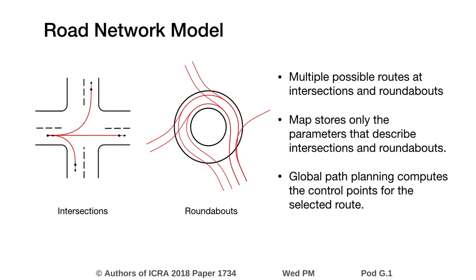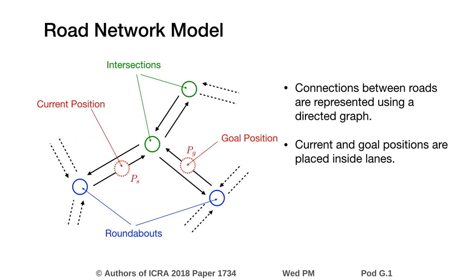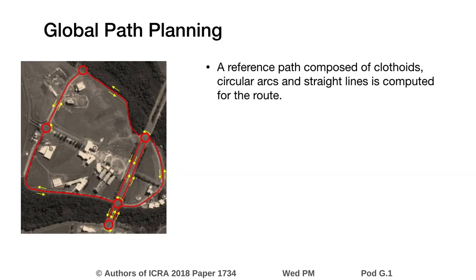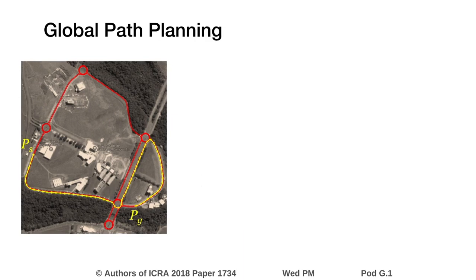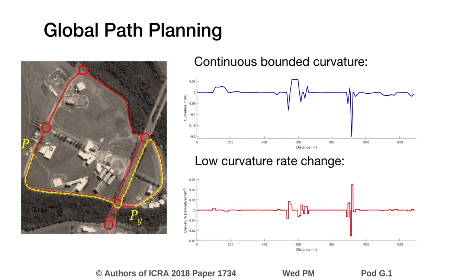Then, the global path planning computes control points for the selected route. Connections between roads are represented using a directed graph, and a route is selected considering the distance between the starting and goal positions. Then, the global path planning computes a reference path considering also parallel and non-parallel lane change maneuvers. The reference path is computed so that its curvature is continuous and has low derivative in order to produce comfort for the passengers.